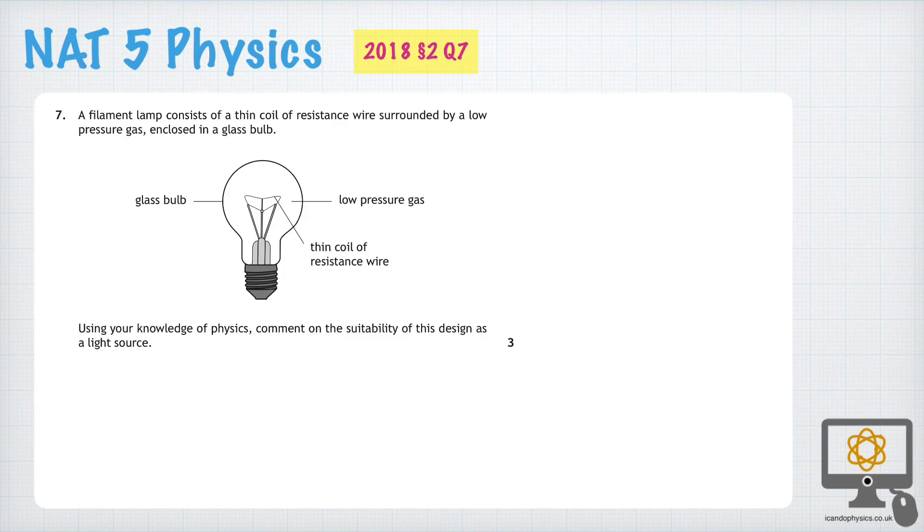The second open-ended question in the 2018 National 5 paper is question 7, and it talks about a filament lamp, which is a thin coil of resistance wire surrounded by a low-pressure gas enclosed in a glass bulb. Using your knowledge of physics, comment on the suitability of this design as a light source.